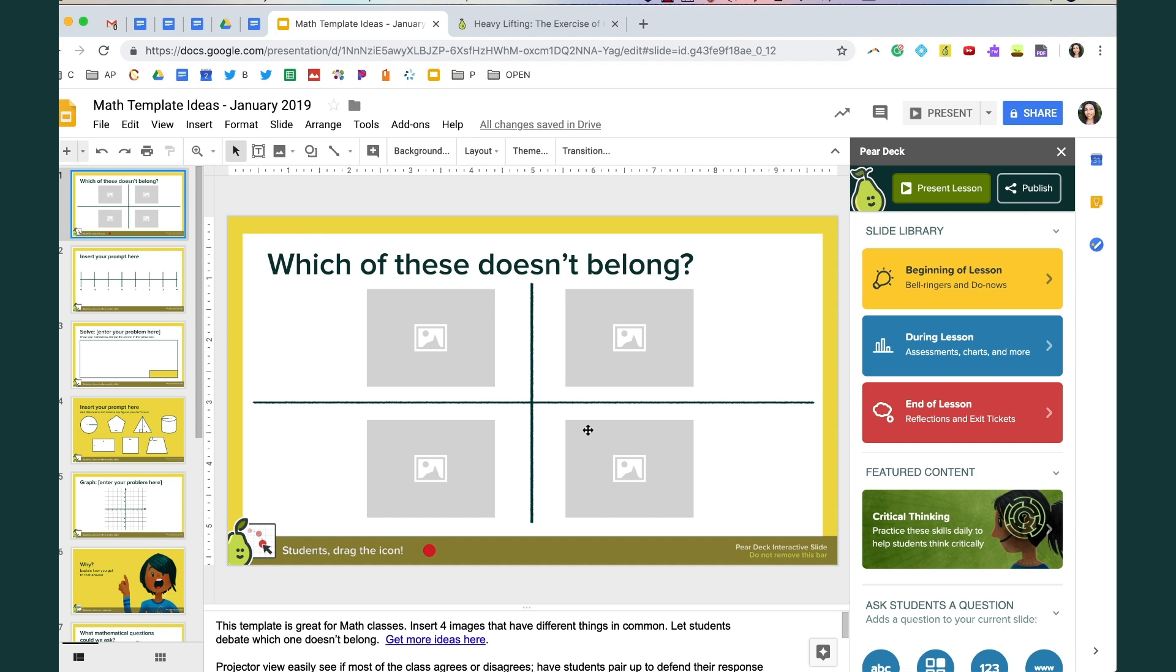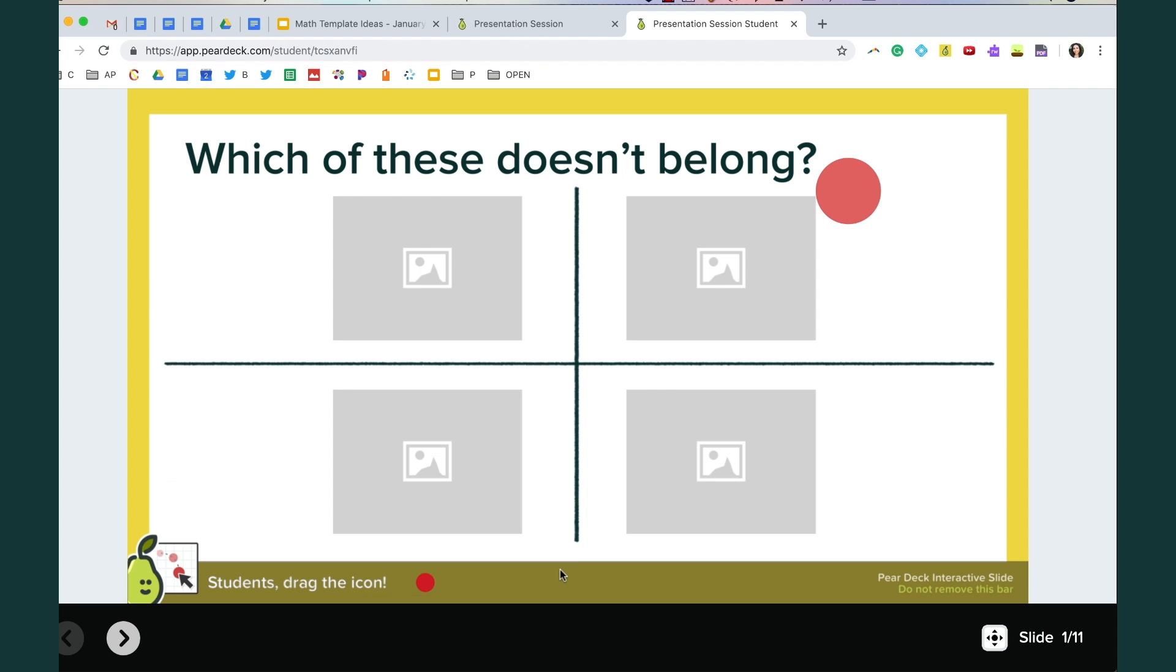The first template idea is which of these doesn't belong. You would replace these four images with images of your own and this is a draggable type slide, meaning from the student end they can drag their dot to the image that doesn't belong.